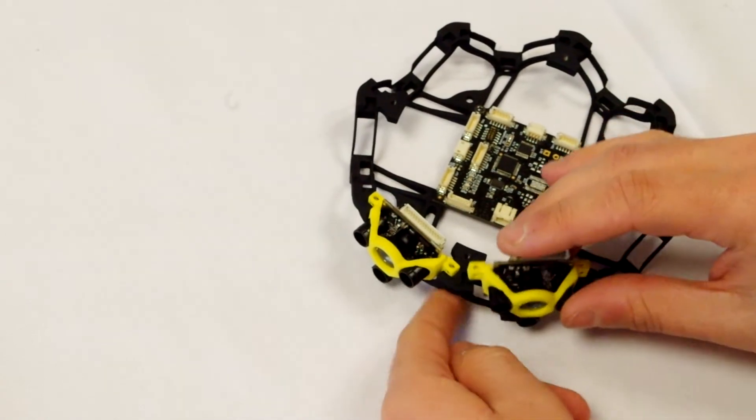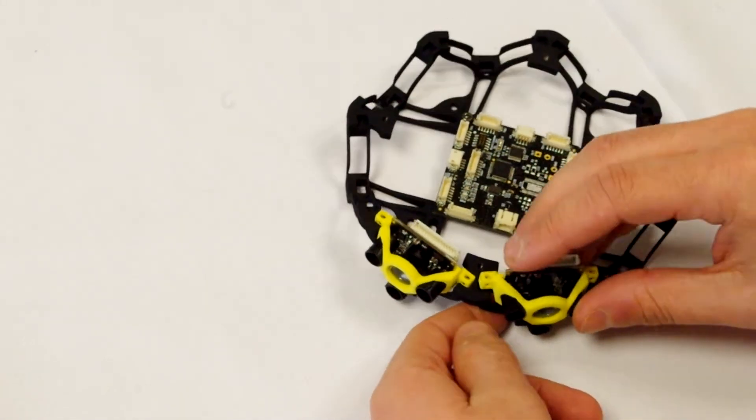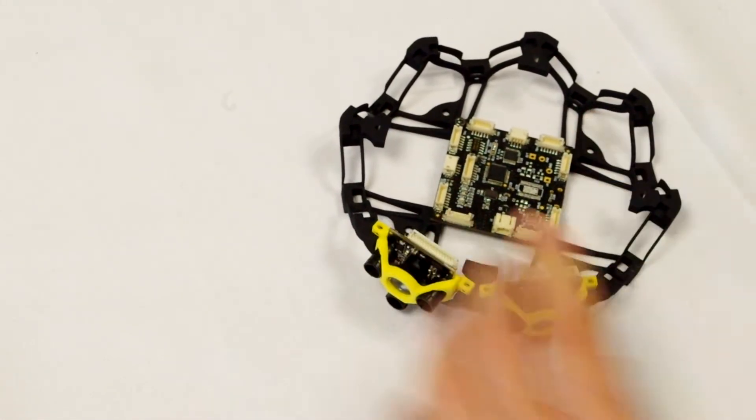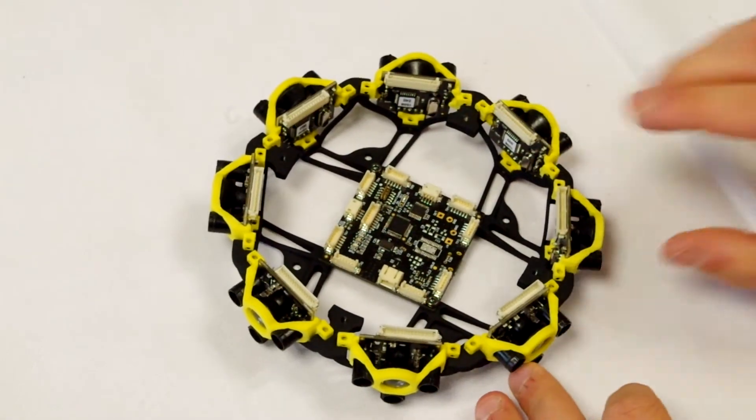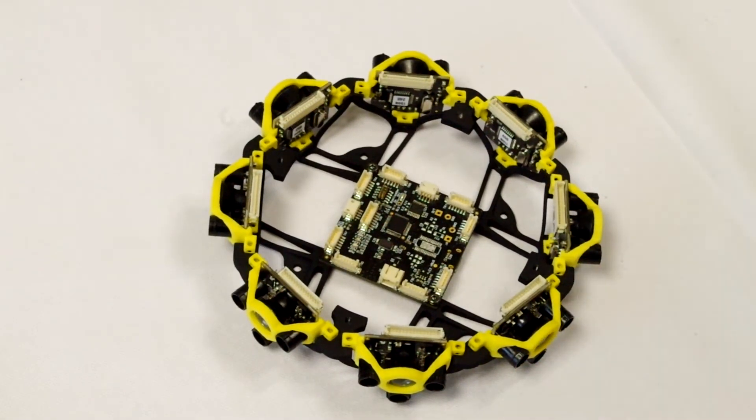You can now do this for the seven other sensors. So now when you have placed all your sensors, you should have a device that looks like this one.